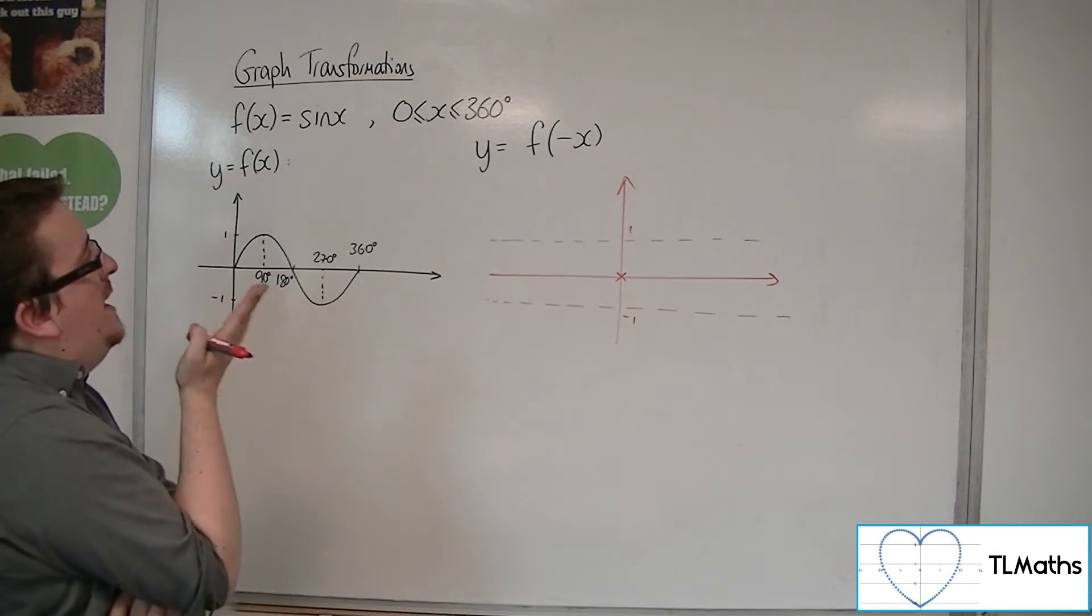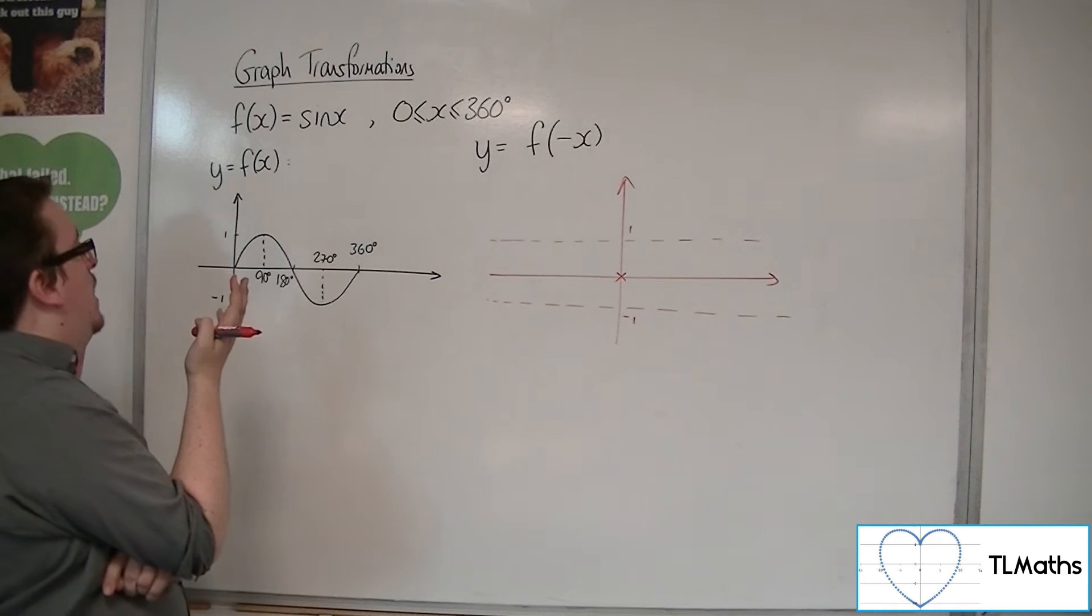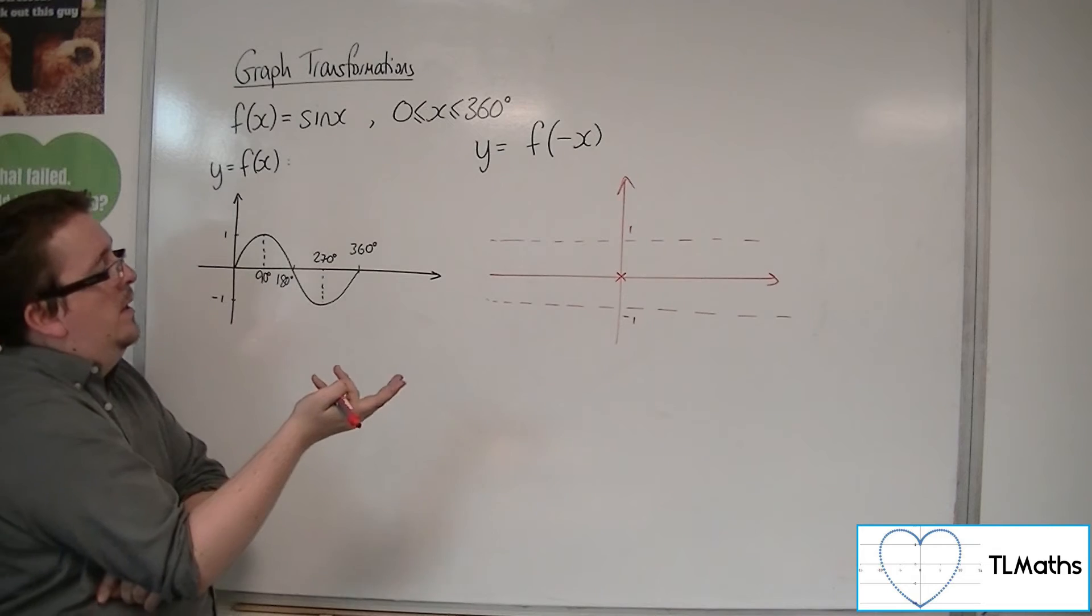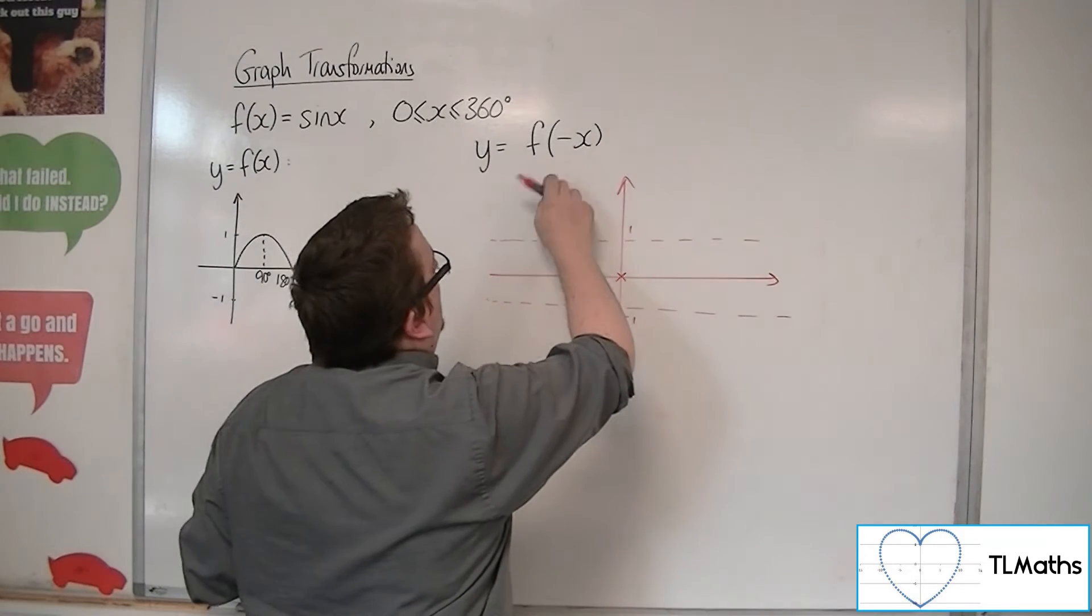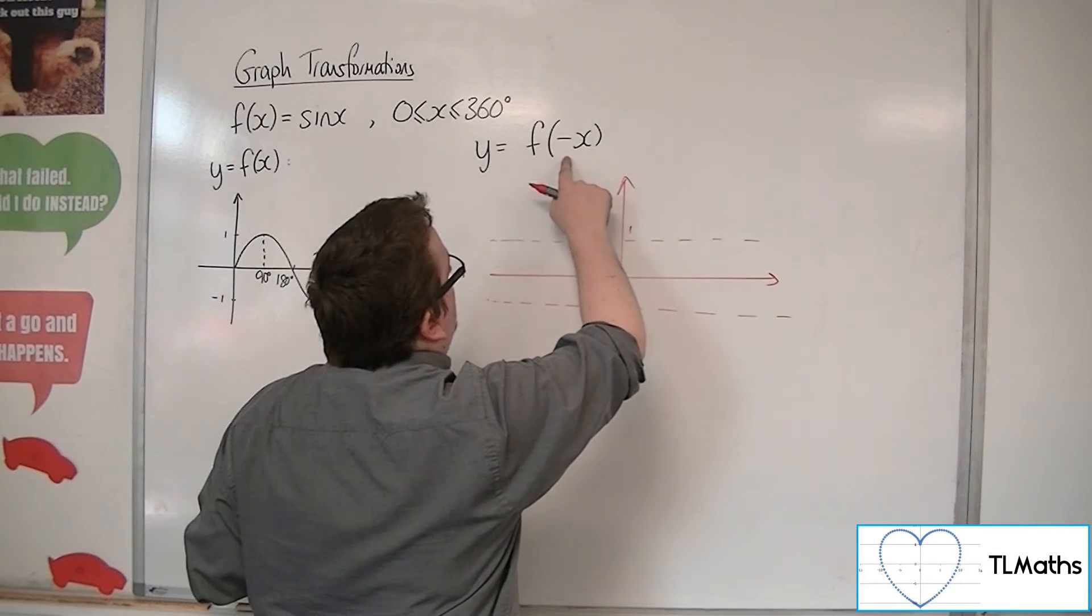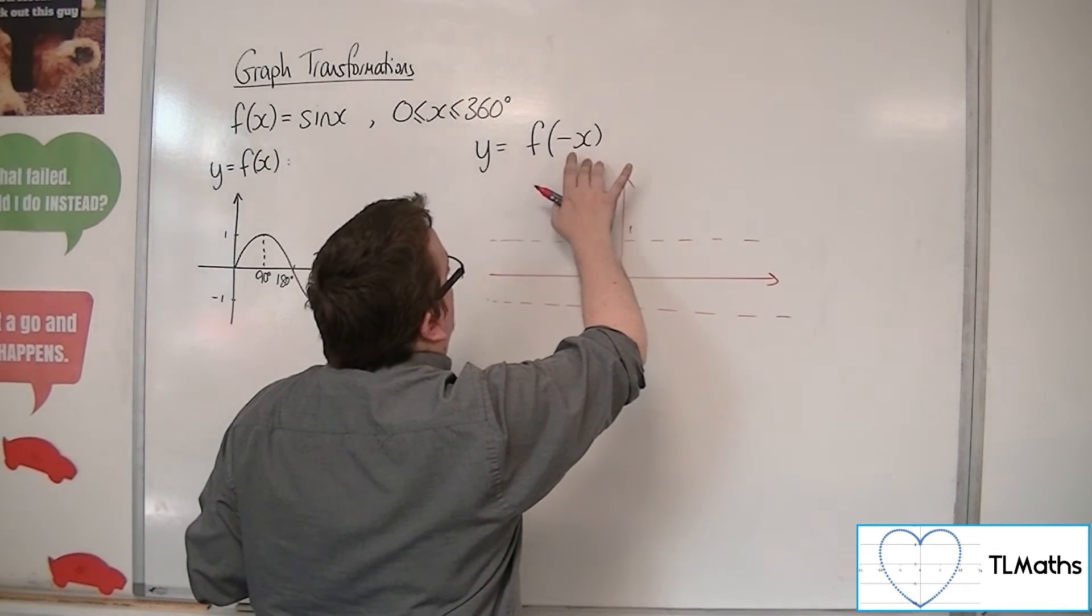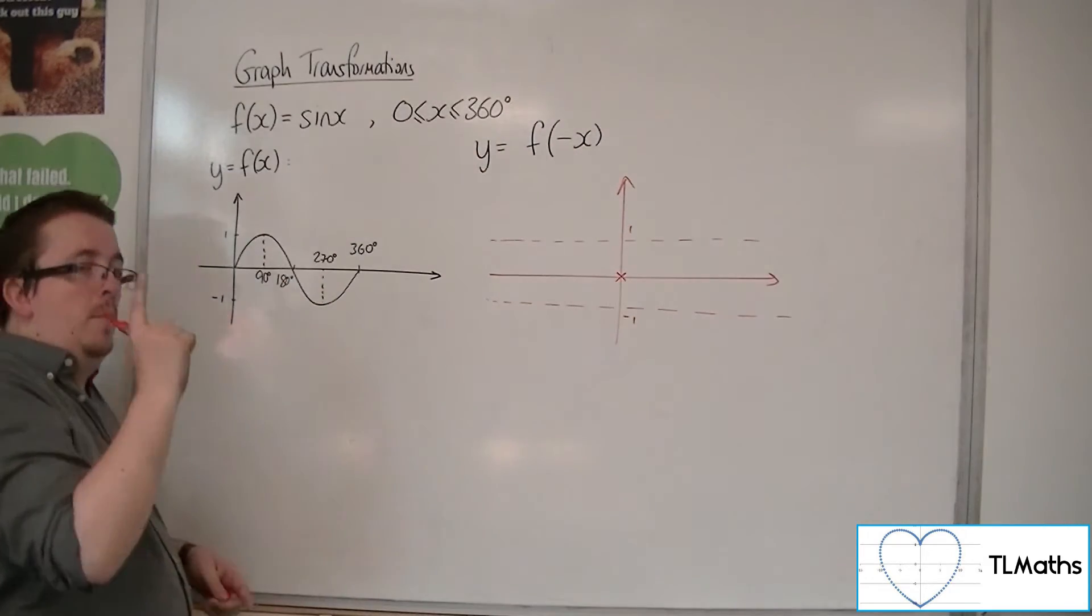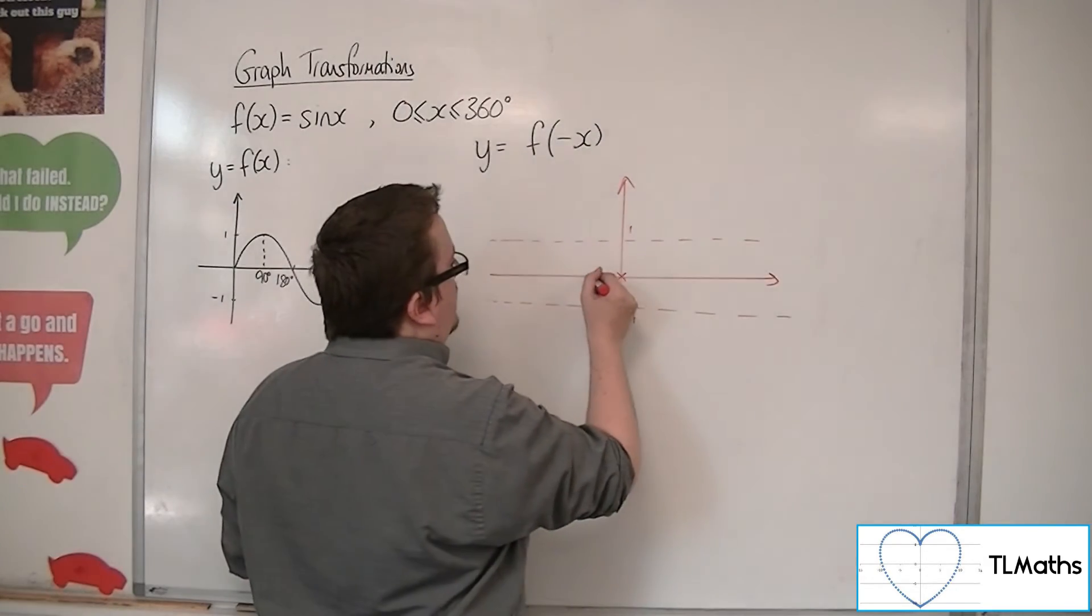well, if I had f of, so if I looked at minus 90, for example, then I would have f of minus minus 90. So f of 90, I know about, that's 1. So minus 90 must be at 1.